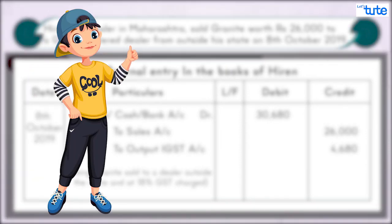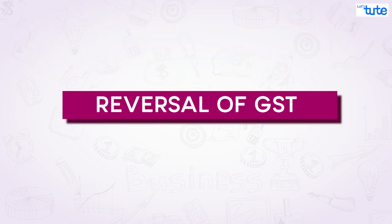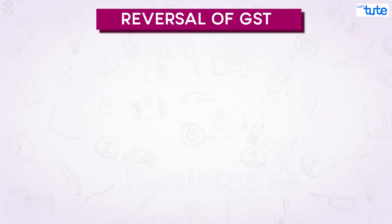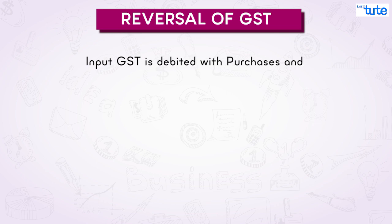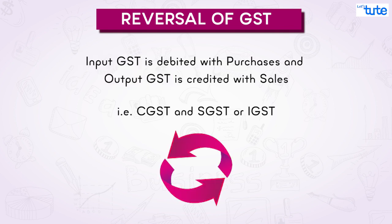We hope your answers were correct and you have well understood the concepts of CGST, SGST, UTGST, IGST, and input and output GST accounting. Now let's start today's session. We saw that input GST is debited with purchases and output GST is credited with sales, but in certain circumstances input GST and output GST — that is CGST and SGST or IGST — may have to be reversed.